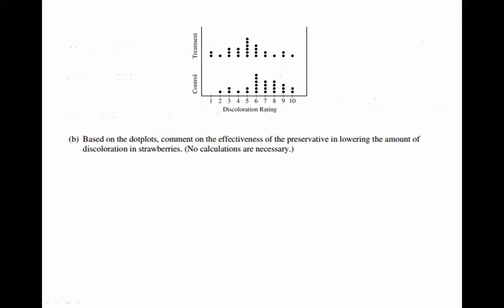Let's move on to part B. Part B asks, based on the dot plots, comment on the effectiveness of the preservative in lowering the amount of discoloration in strawberries. No calculations are necessary. Notice that we are trying to lower the amounts. And we do have to know some vocabulary here. You've got the control, which is the bottom dot plot. The control is the no change, no treatment. And the one that says treatment is the with preservative.